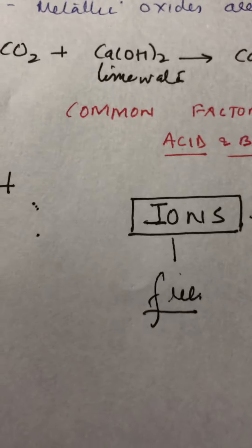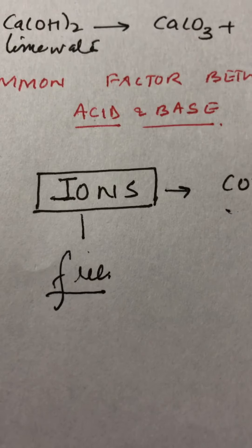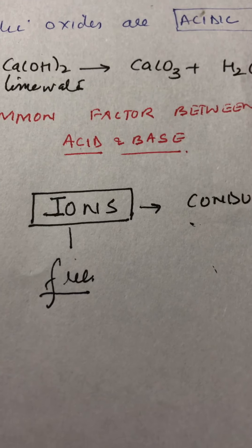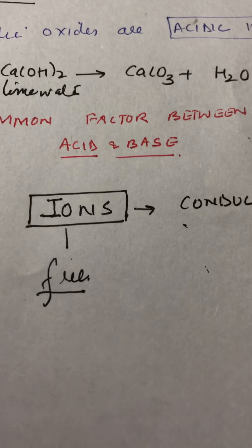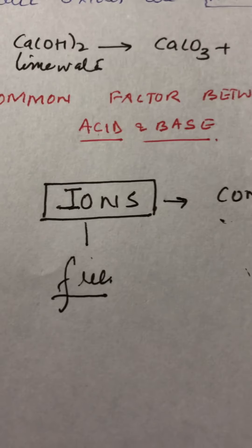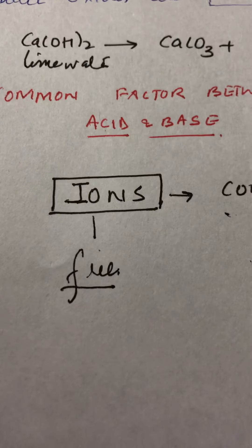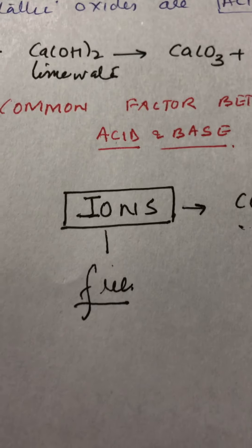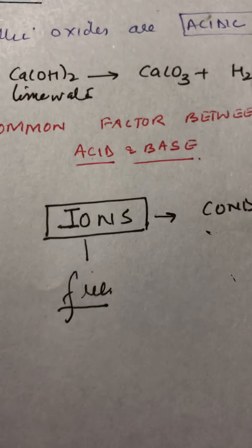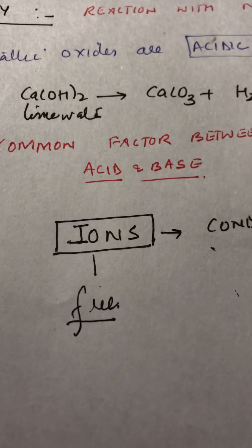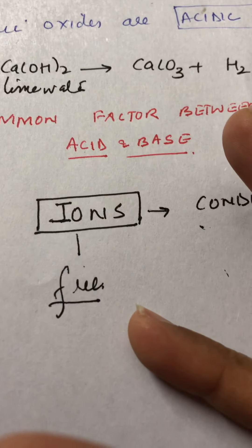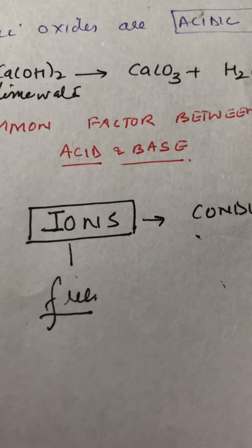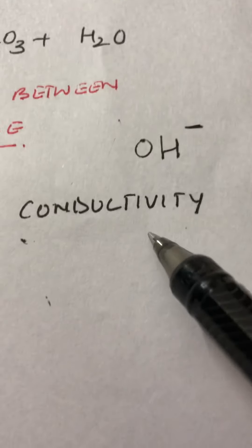You have already studied in the first chapter that pure water is a poor conductor of electricity. In the electrolysis of water activity, you would have seen that to make water a good conductor, a few drops of sulfuric acid are added. When the acid is added, it ionizes in water and the solution contains free mobile ions, which make water a good conductor.